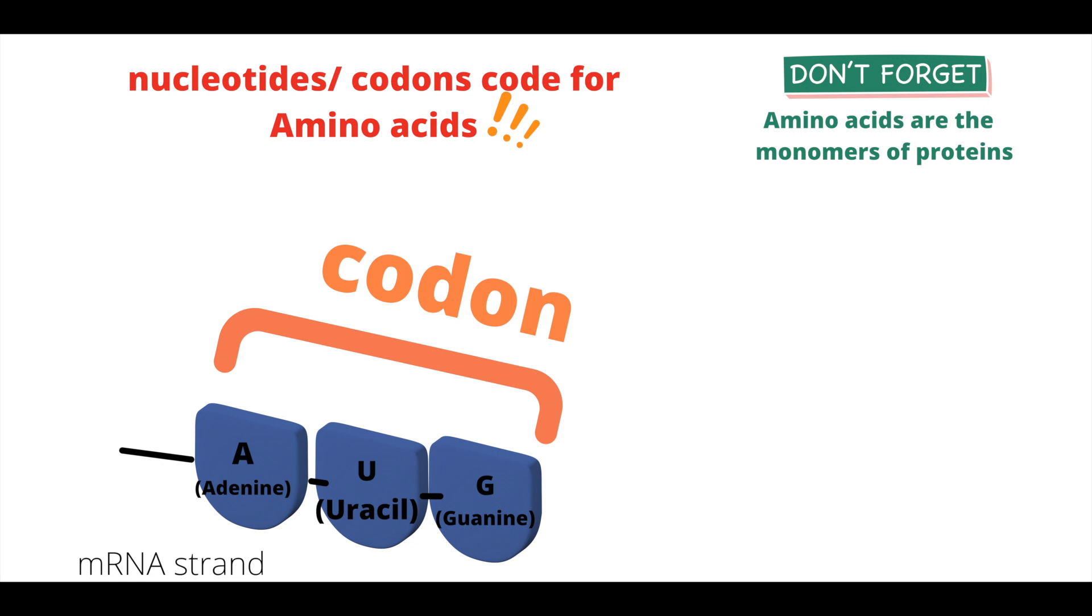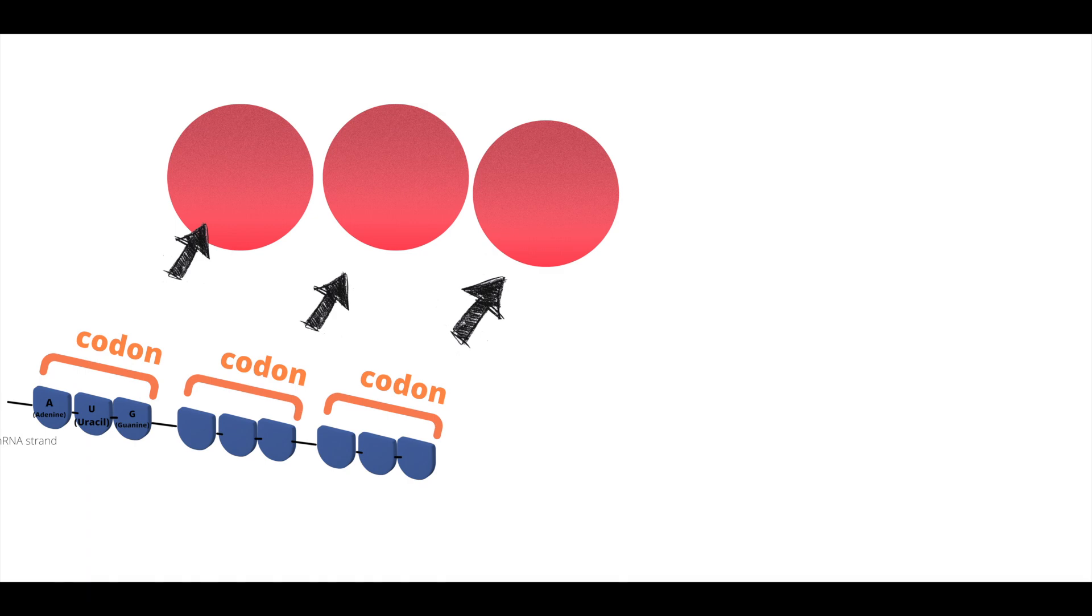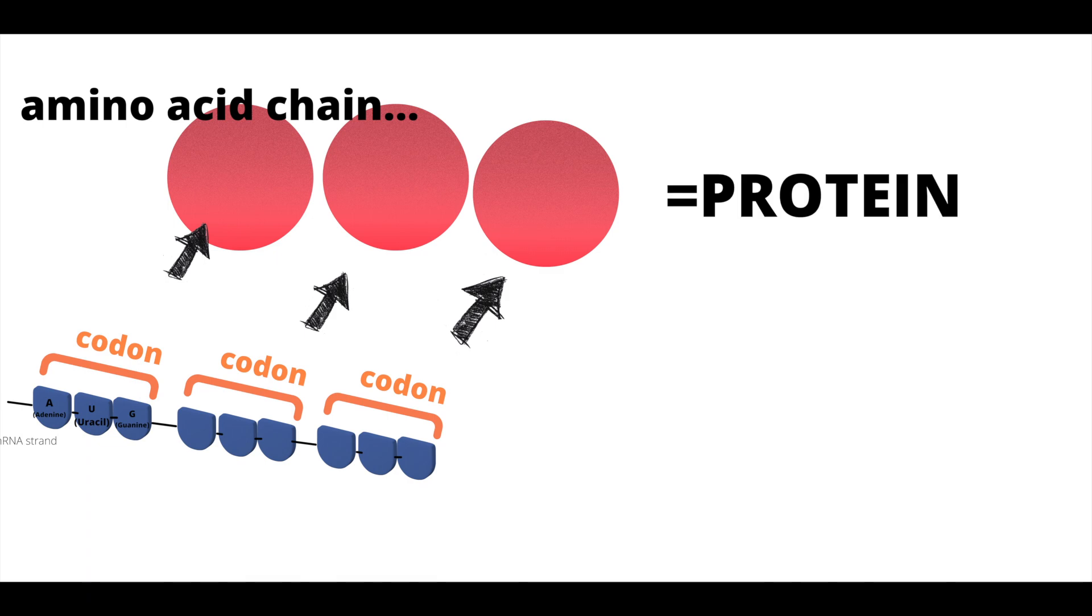Methionine is an amino acid, a building block of protein. When we have multiple codons together with multiple amino acids, they eventually create an entire protein.